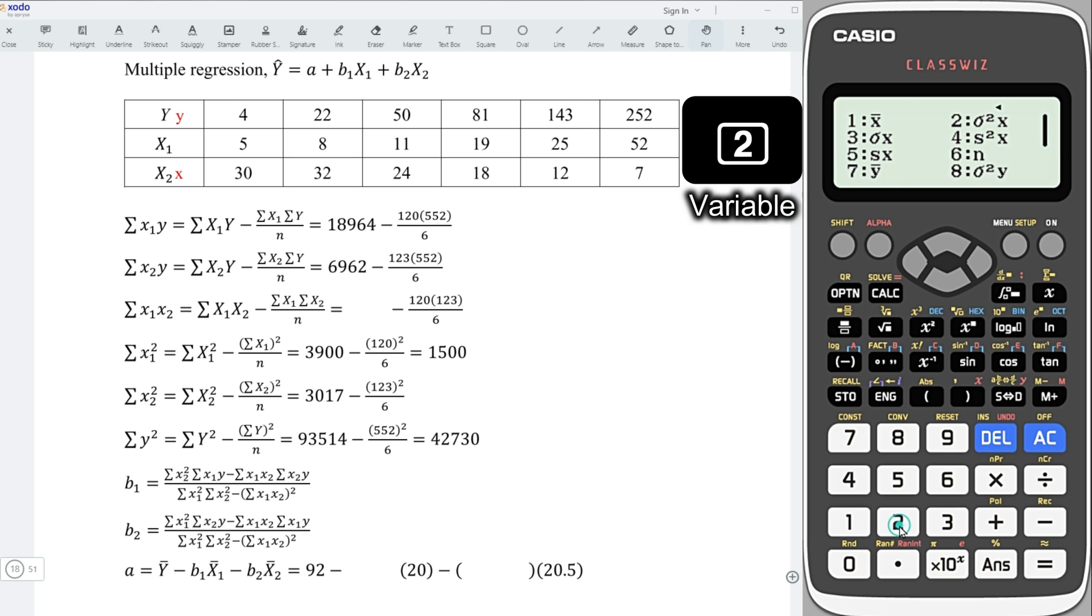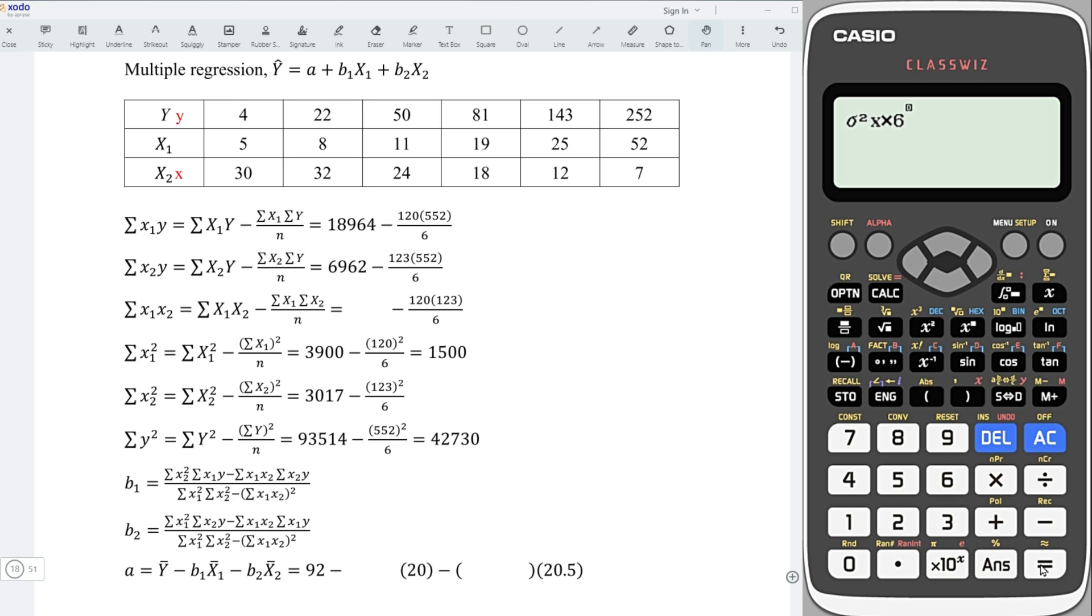Next, press on AC option, down, 2 variable. We need the variance of x. Multiply 6, and we obtain the sum of squares for the variable x2. Next, press on option, data. This time, I will let x1 be y.